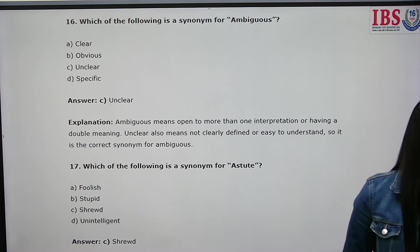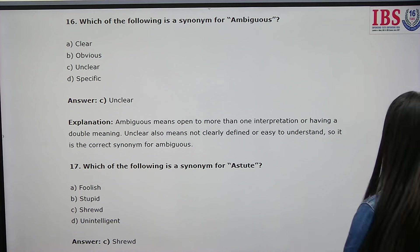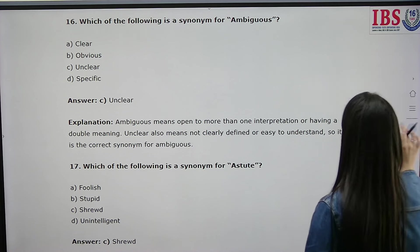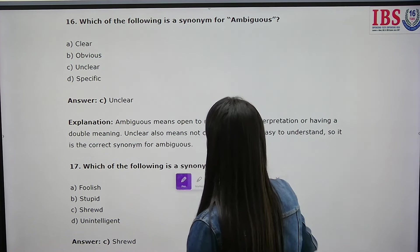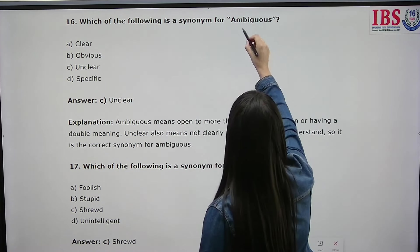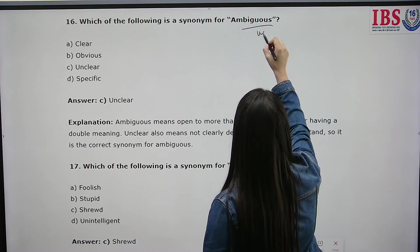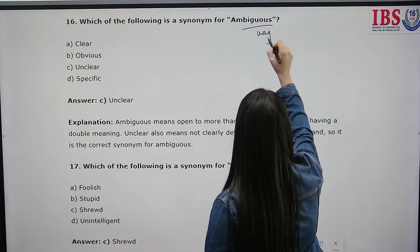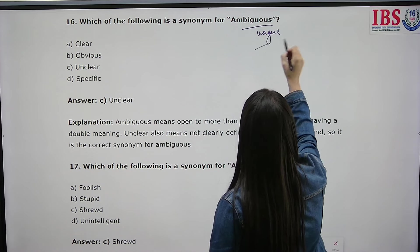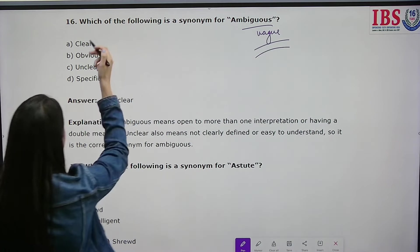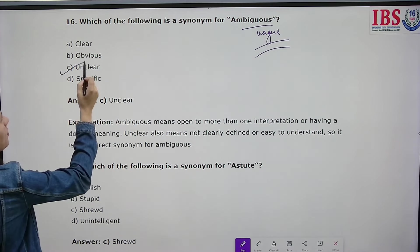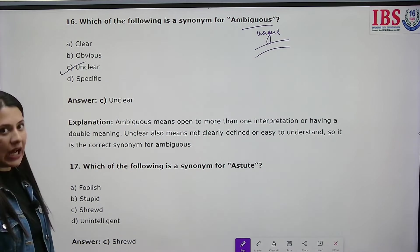Which of the following is a synonym for 'ambiguous'? Ambiguous means vague — not at all clear. From the options, unclear is the answer.